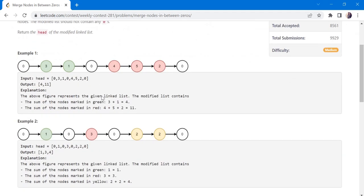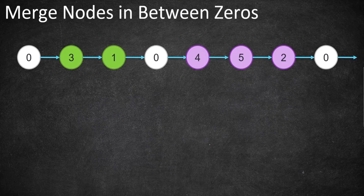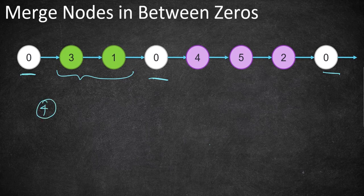Let's understand this with an example. We have to return a head of a linked list without zeros and after merging. There is one zero at the start and one zero at the end. We have to sum the values between two zeros and make them into one node. So three plus one sums up to four. Then between the next pair of zeros there are three nodes which sum up to eleven — that is four plus five plus two. So the result list has two nodes: four and eleven.